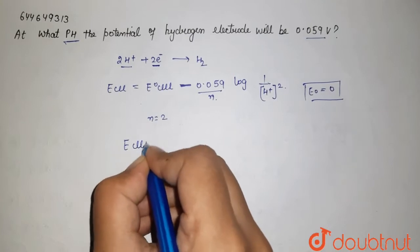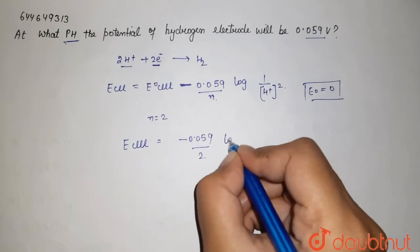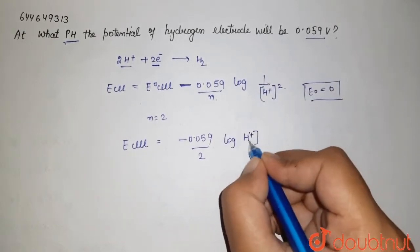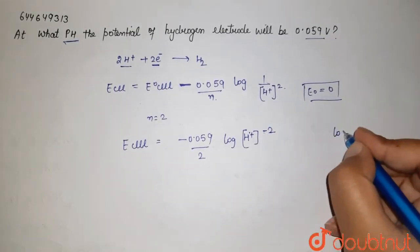E_cell equals minus 0.059 over 2 times log 1/[H⁺]². This can be written as [H⁺]⁻². Using log properties, when we have log x^y, the exponent y comes in front of the log. So it's minus 0.059 over